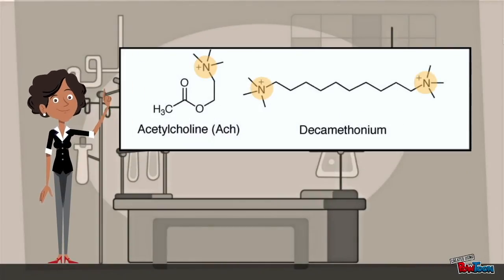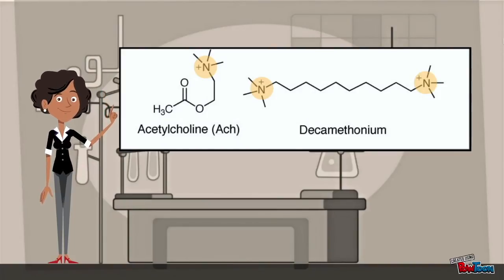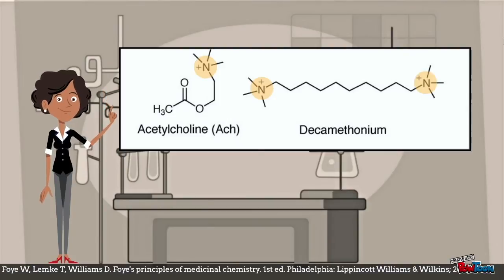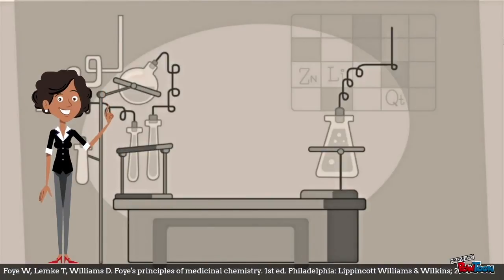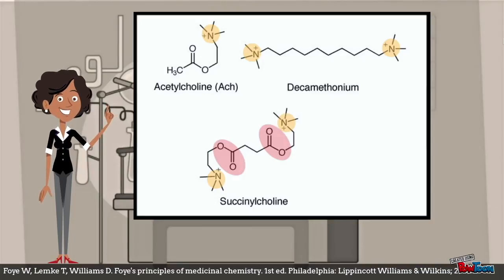Eventually, decamethonium was found to be a valuable depolarizing agent that acts as an agonist at acetylcholine receptors. Its structure features the same quaternary ammonium groups and shows similarity to acetylcholine. This was then developed into succinylcholine, also referred to as succimethonium, making it a dimer of acetylcholine bonded through an alpha carbon atom.